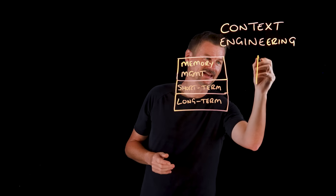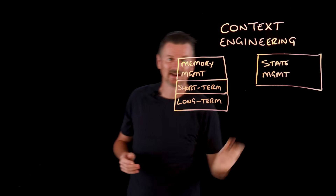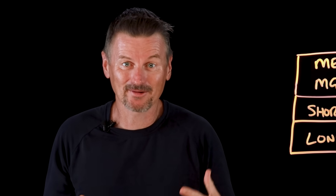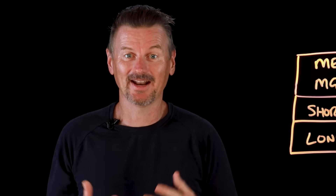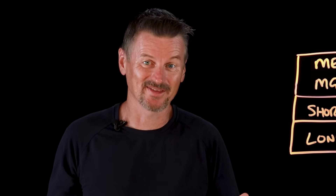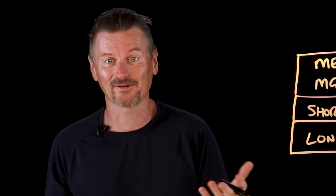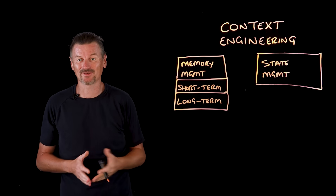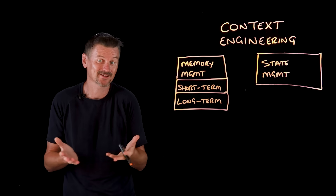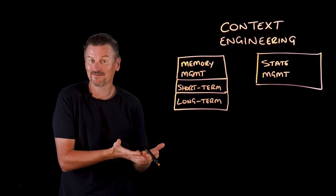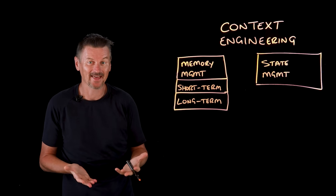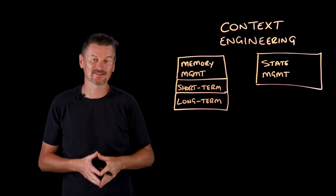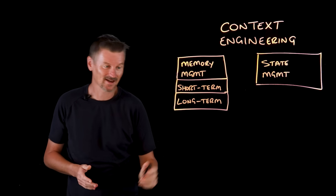Then there is state management — this tracks where we are in a multi-step process. If an agent is booking a complete trip — the flight, the hotel, the ground transportation, all of it — the agent needs to maintain state across these operations. Did the flight booking succeed? What's the arrival time for scheduling the airport transfer? State ensures that the agent doesn't lose context mid-task.